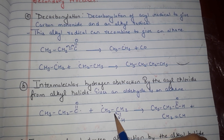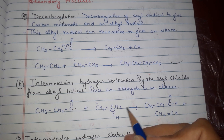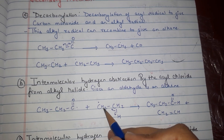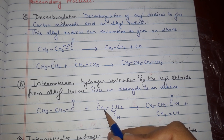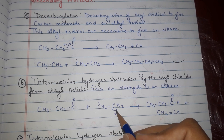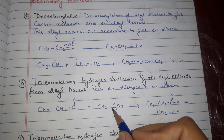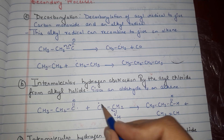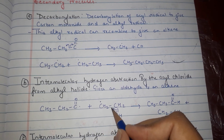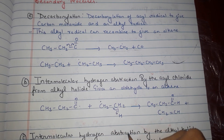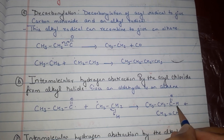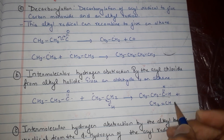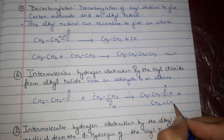In the second step, intermolecular hydrogen abstraction by the acyl chloride radical gives an alkyl chloride. The alkyl radical CF₂CF₂ is present, and this radical abstracts a hydrogen — transferring an H to the CHO group — resulting in the formation of an aldehyde and a CH₂ alkene.